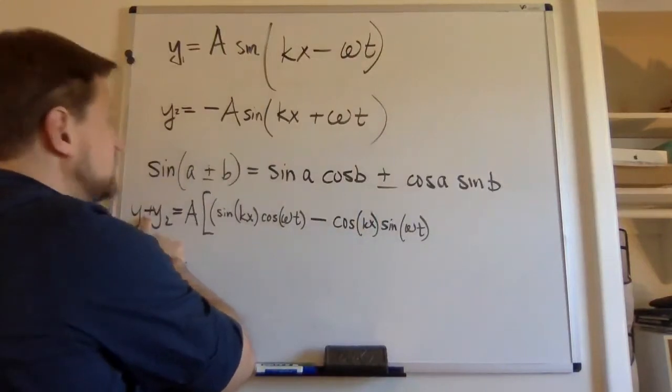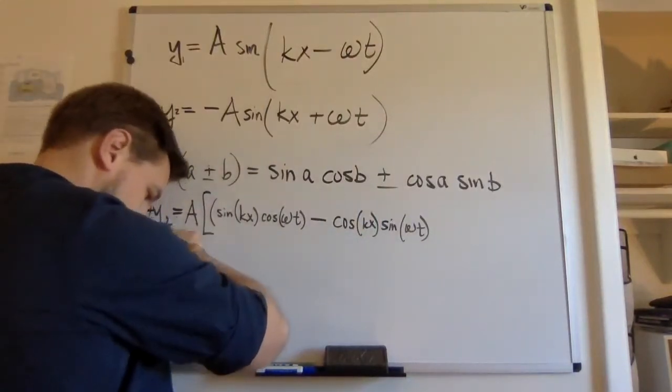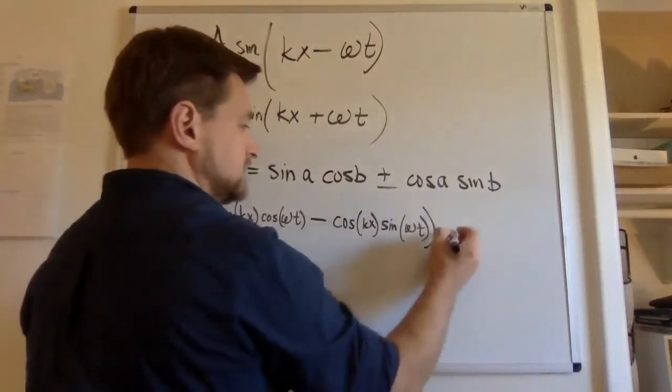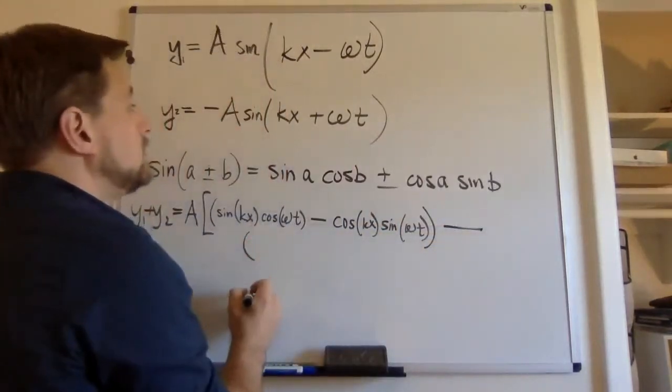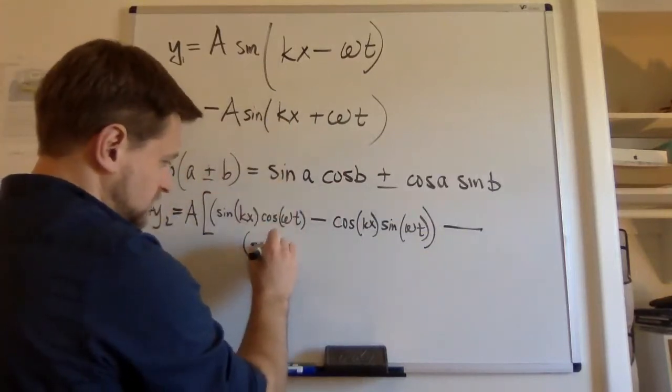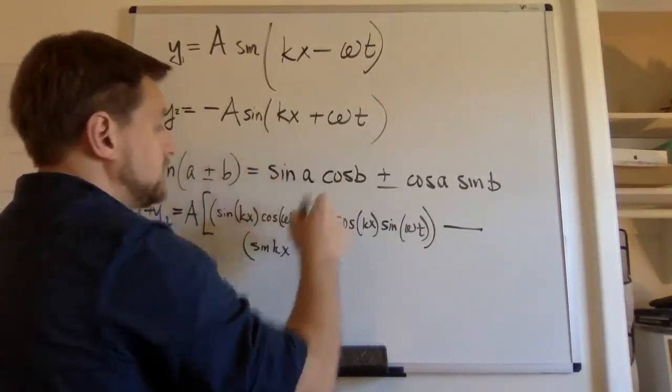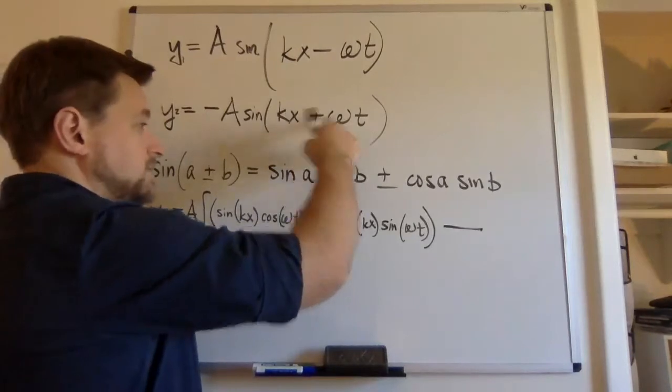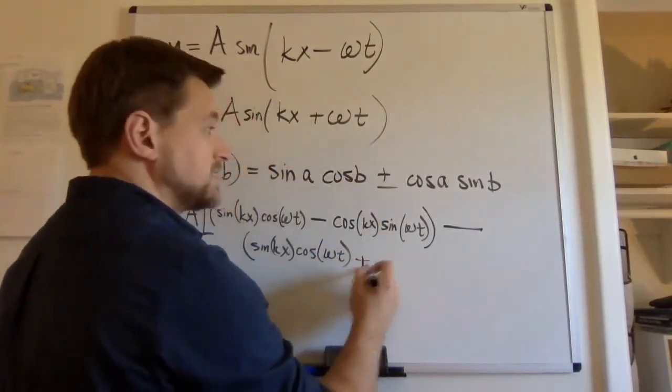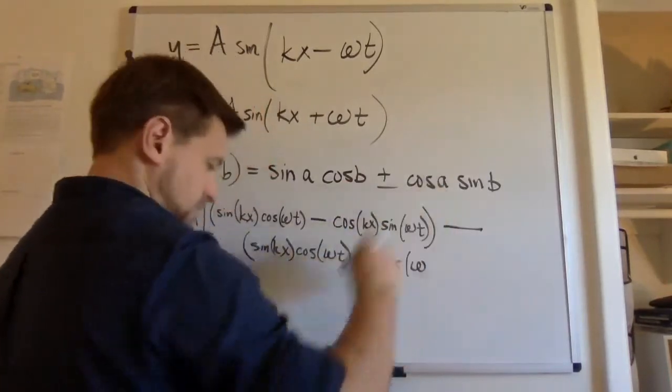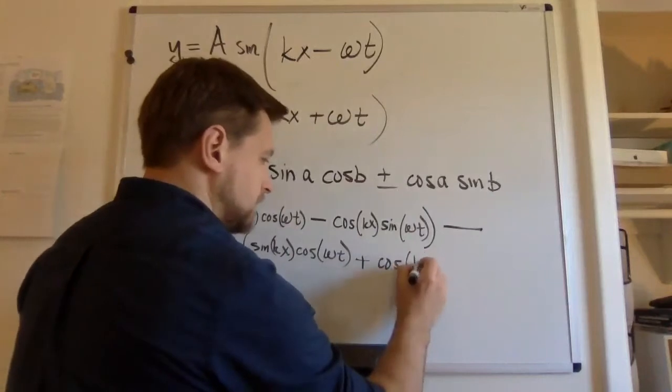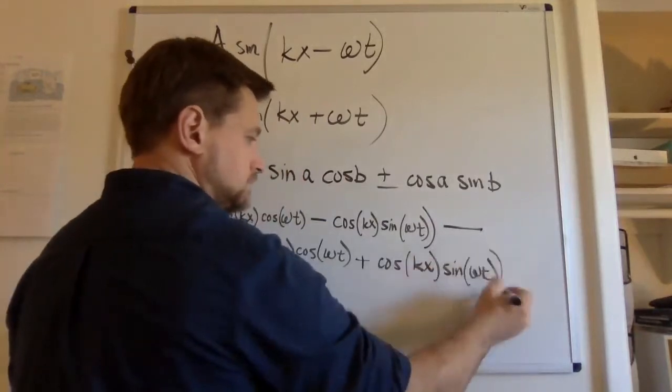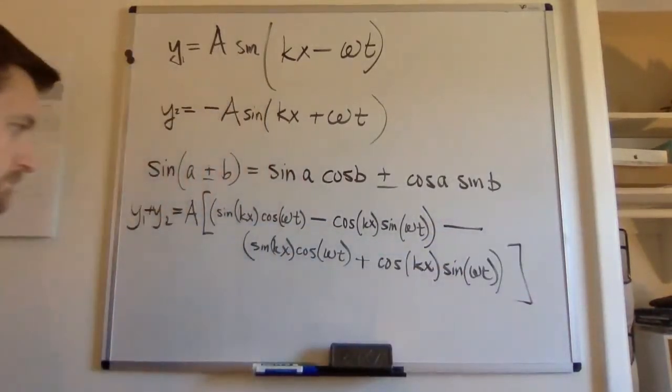So we're going to add this, but that starts with a minus sign. So really what we're doing is subtracting. Minus sine of the first thing, cosine of the second thing. This is a plus sign. So we use the plus version of the identity. Plus cosine kx, sine of the second thing.